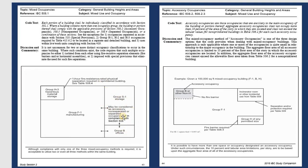Looking at Section 508: Group B has a maximum for office use, storage typically has a large number of occupants, and Group F (manufacturing) can have a large area. So in just one building you can have many different groups, and you need to solve the requirements for each of them.